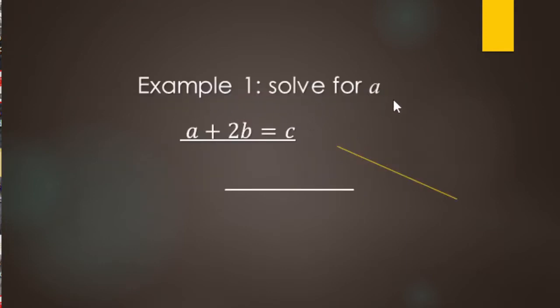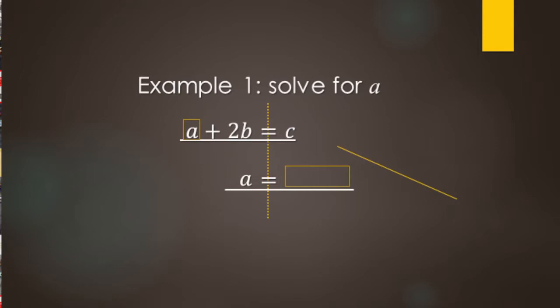For this example, we're going to solve for A. We've got to find A in our equation — there it is right there. When we solve for A, that means we want it to look like A equals, and then instead of a value, it's going to be an expression. We solve it the same way we solve all other equations.